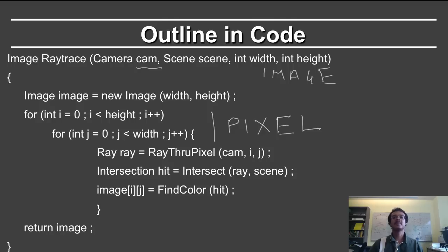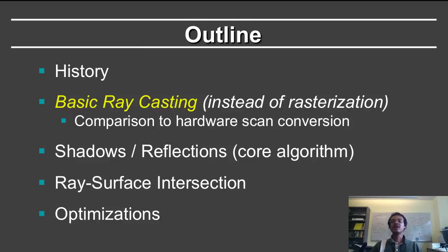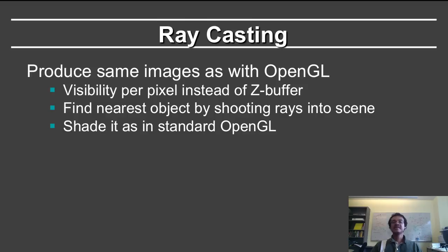The devil is, of course, in the detail. But because of the conceptual simplicity of a ray tracer, it's become a very popular approach to create 3D computer graphics. The first part of the algorithm we'll discuss is basic ray casting. In this case, we'll produce essentially the same images you could do with OpenGL — just using ray casting to resolve visibility and depth instead of rasterization. The visibility is per pixel: you do one pixel at a time instead of using the z-buffer. You find the nearest object by shooting rays into the scene, and then you shade it as in OpenGL.